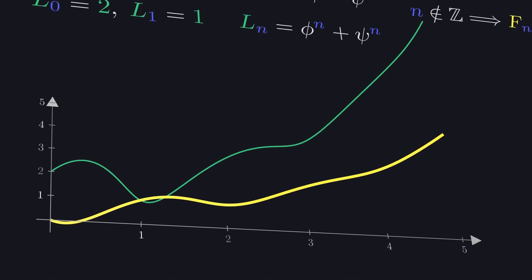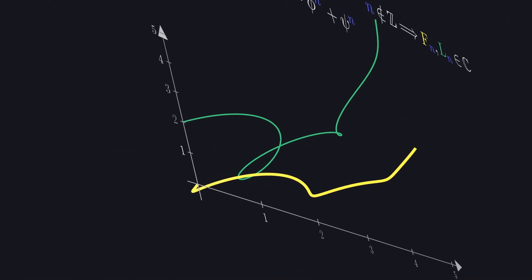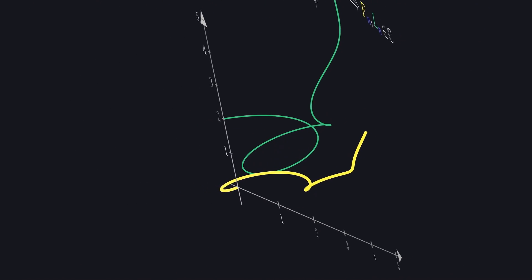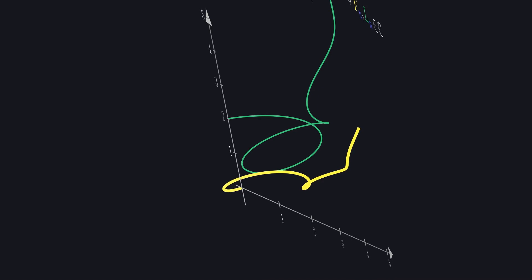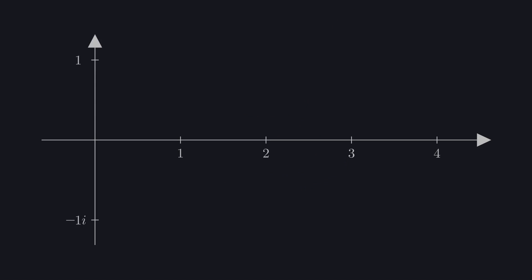In our journey today, we wouldn't get very far continuing to plot complex numbers against n in three dimensions. It gets disorienting pretty fast. Instead, we'll draw the sequence parametrically, which means we won't be assigning any axes to n, but instead we'll be drawing the complex outputs of the closed-form expression directly onto the complex plane. Let's do it for the Fibonacci numbers, starting at 0.